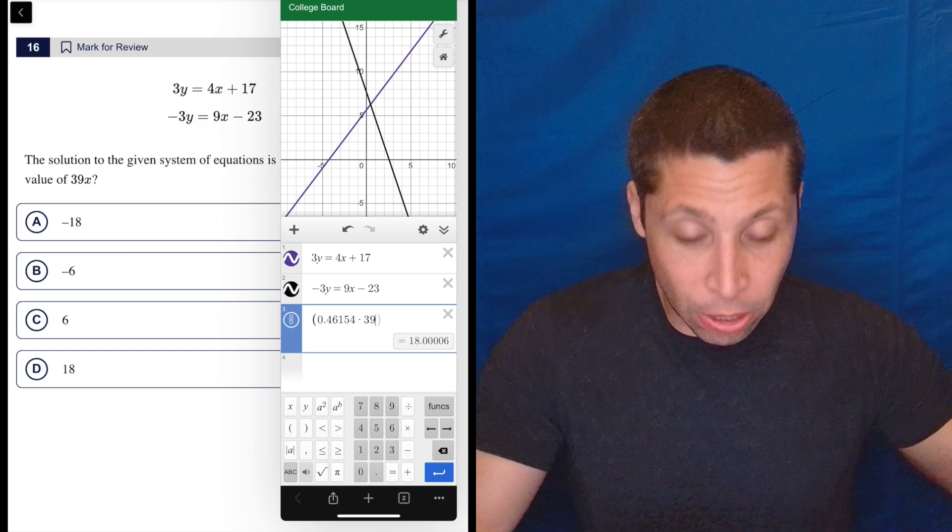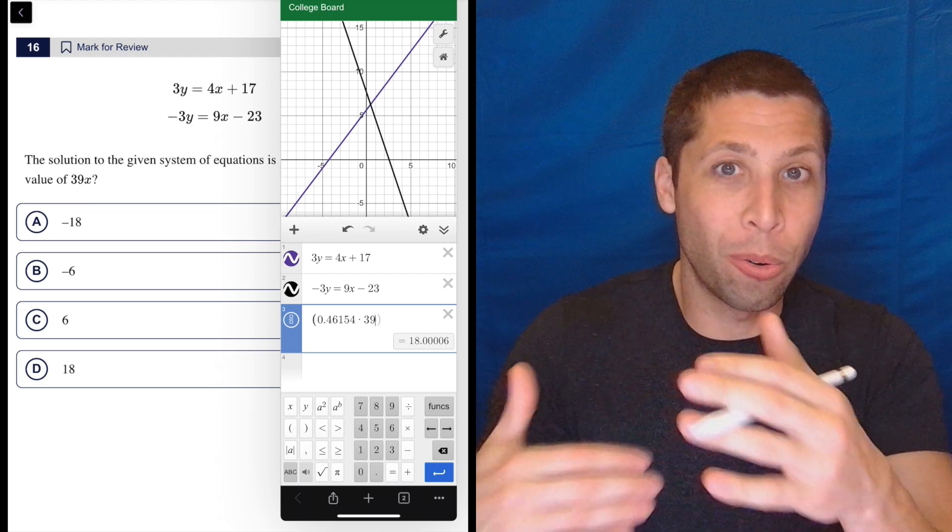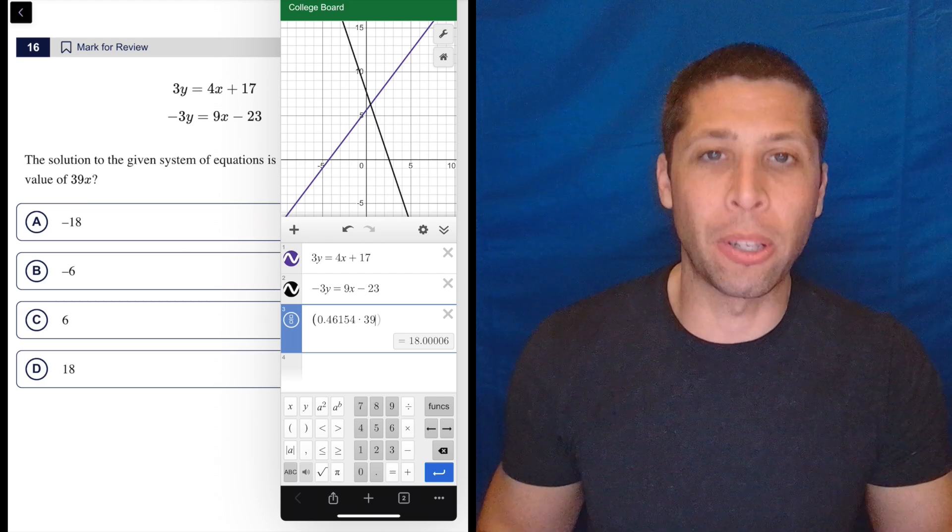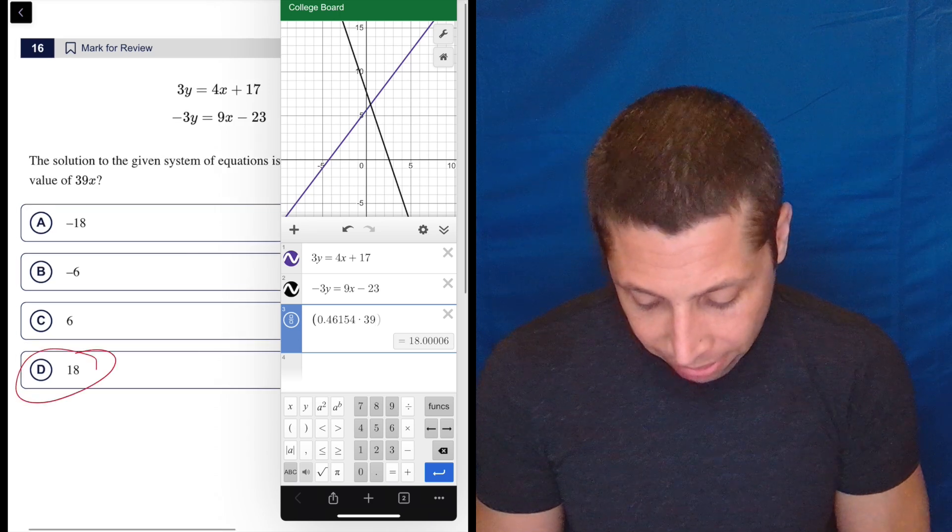So times 39 is 18. And yeah, there's some extra little bit, but that's because it's a messy decimal question. And so it's got to cut that decimal off somewhere, but it's cutting it off so far that there's no doubt here. It's clearly 18. So yeah, that's the answer.